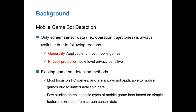For mobile game bot detection, only screen sensor data is always available due to two reasons. The first is about generality: screen sensor data is applicable to most mobile games. The second is about privacy protection: game bot detection based only on sensor data does not require access to other private data and is low-level privacy sensitive. However, existing game bot detection methods mostly focus on PC games and are not applicable to mobile games due to limited available data. Only few studies detect specific types of mobile game bots, such as auto-clicking, based on simple features extracted from screen sensor data. So far, bot detection in mobile games has not been well explored.